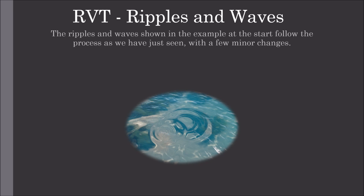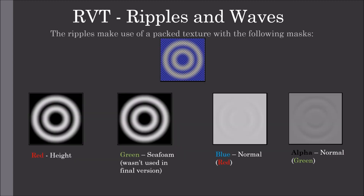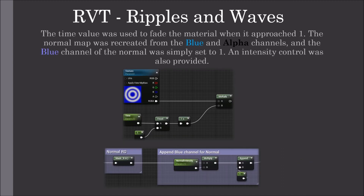The ripples and waves shown in the opening example follow this same process with a few minor changes. To get multiple ripples and waves overlapping each other, the opacity output needs to be rendered in the drawer material along with the other outputs. The ripples make use of a packed texture with the following channels: red for the height mask, green for a seafoam mask (not used in the final water material), blue for the normal's red channel, and alpha for the normal's green channel. The time value was used to fade the material as it approached one, and the normal map was recreated from the blue and alpha channels, with the blue channel of the normal set to one.